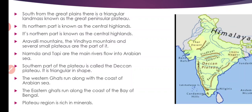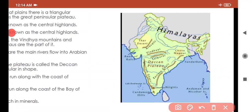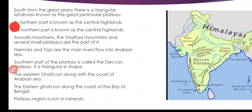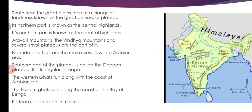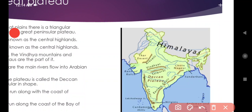Where are the plains? Plains are in the northern area. Yeh jo northern area hai, yahan par plains hai, aur iske south mein humare paas plateau hai — peninsular plateau. Its northern part is known as Central Highland.